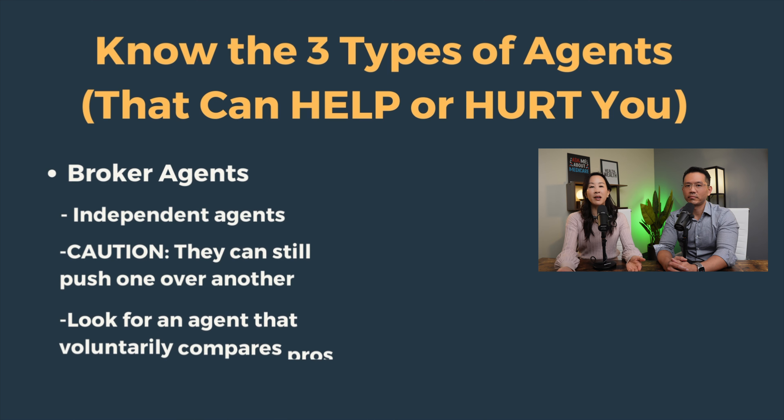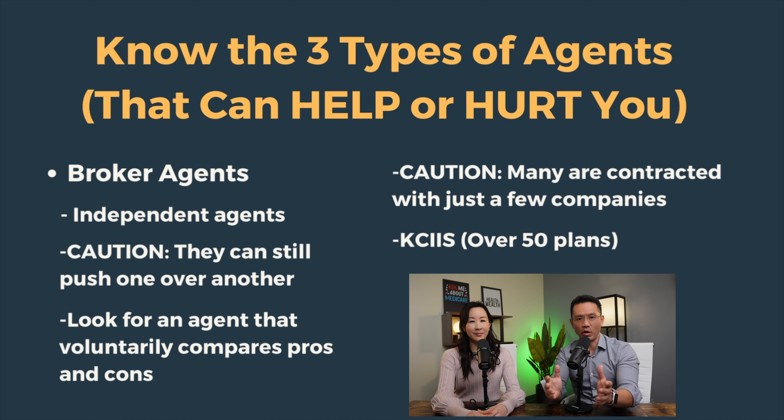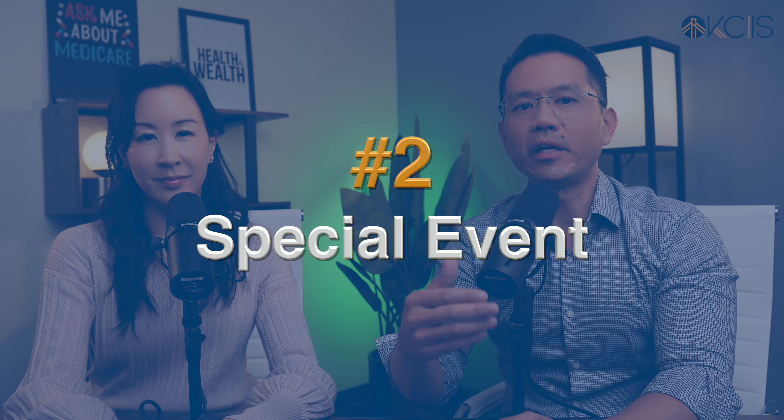Regardless of who you call, the price and benefits of these plans will be exactly the same. The three types of agents are: captive agents, career agents, and broker agents. Captive agents can only sell the plan or company they are licensed with — they cannot talk about or sell you other plans, and this is where you feel the biggest sales pressure. Career agents are allowed to sell other plans but must first push the company they are contracted under. Broker agents are independent and can sell many different companies — typically they are less pushy. However, just because they're independent doesn't mean they won't push one plan over another. Look for agents that voluntarily compare other companies and openly discuss pros and cons. Even the nicest brokers are only allowed to sell the plans they are contracted with, and it's not easy to find brokers with more than 5 to 10 plans.